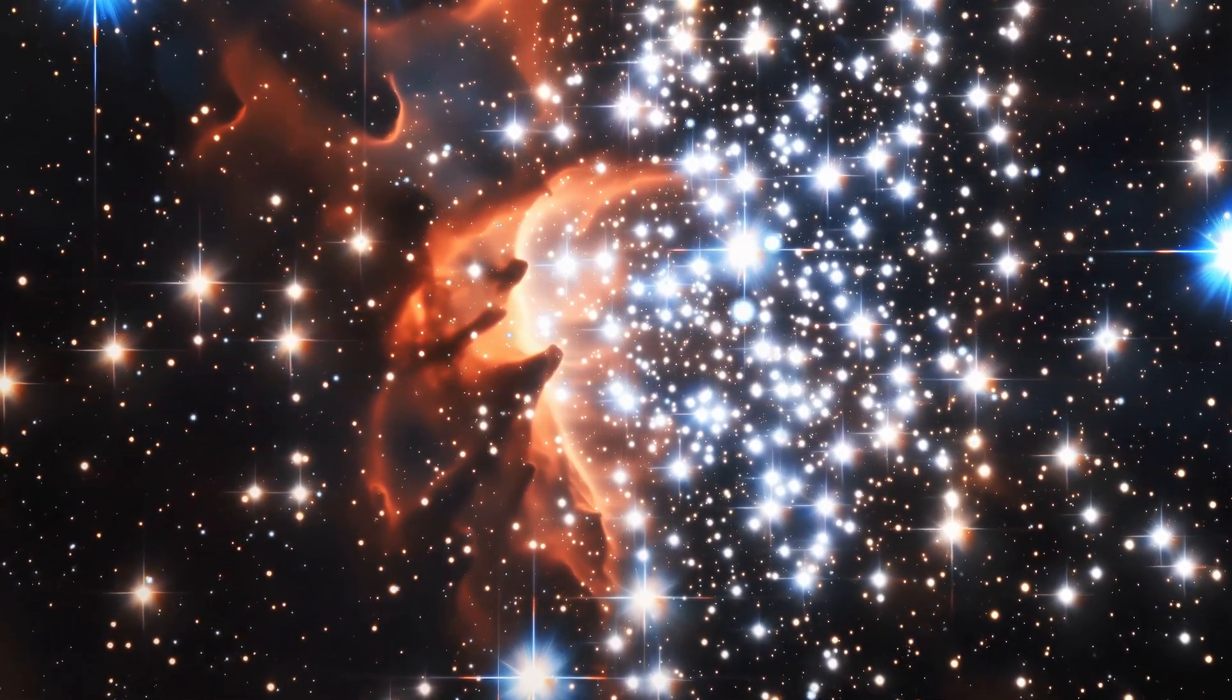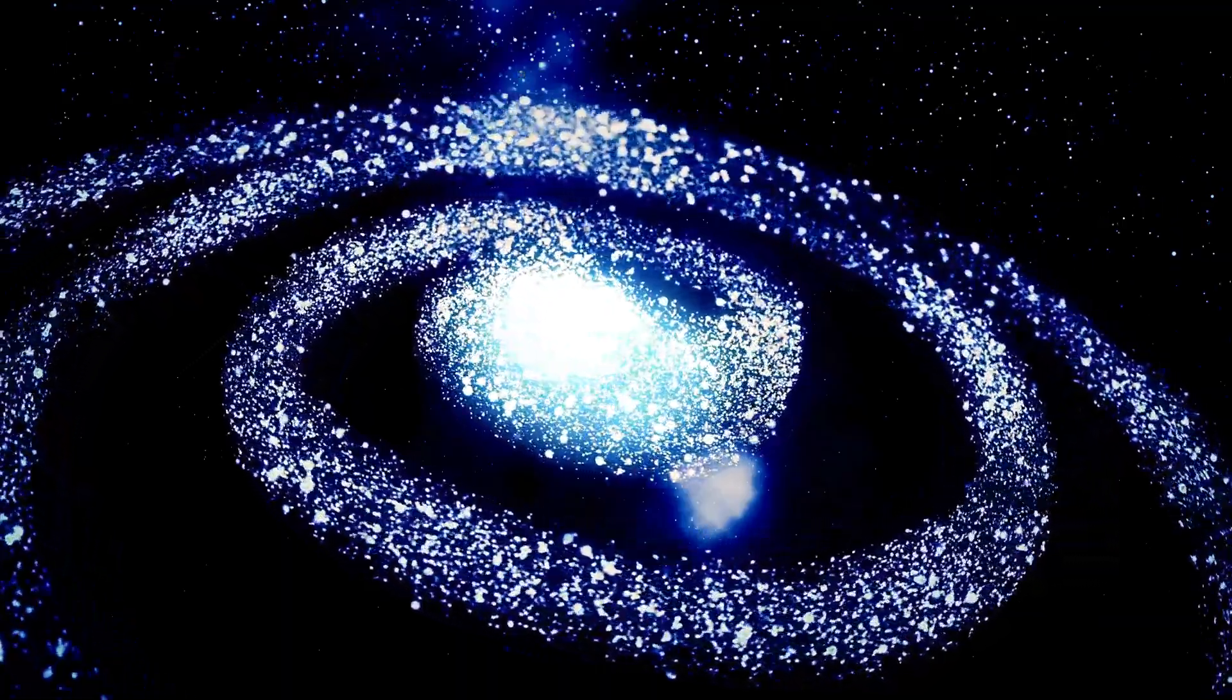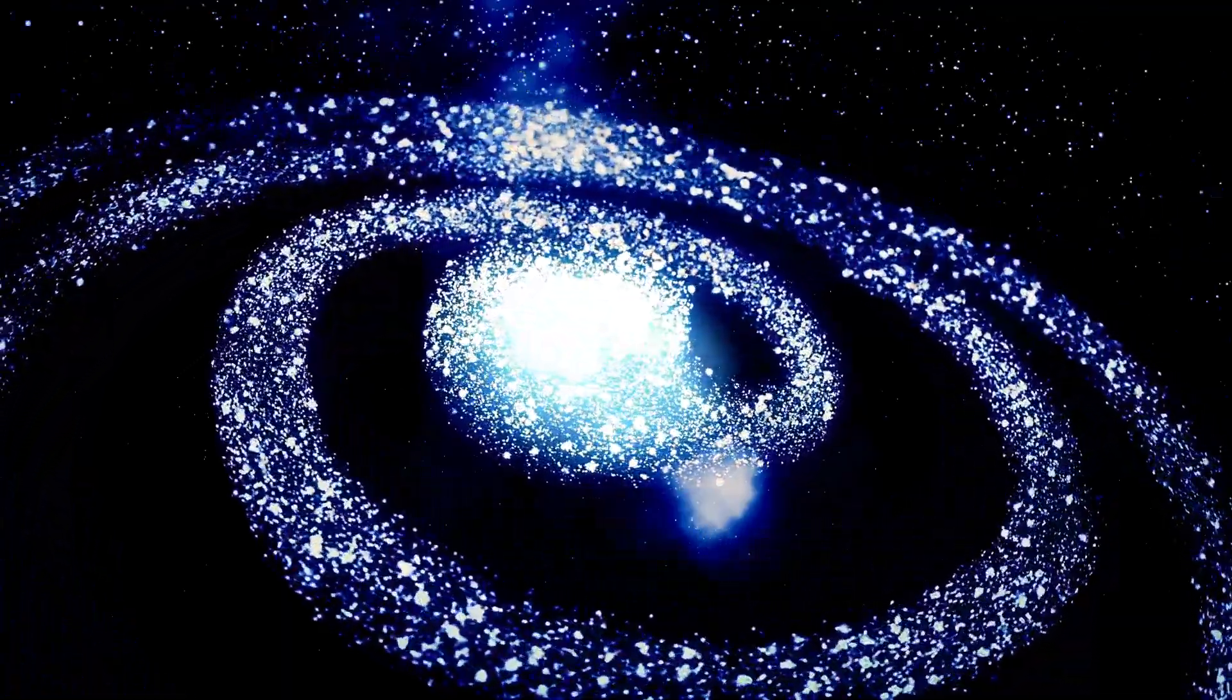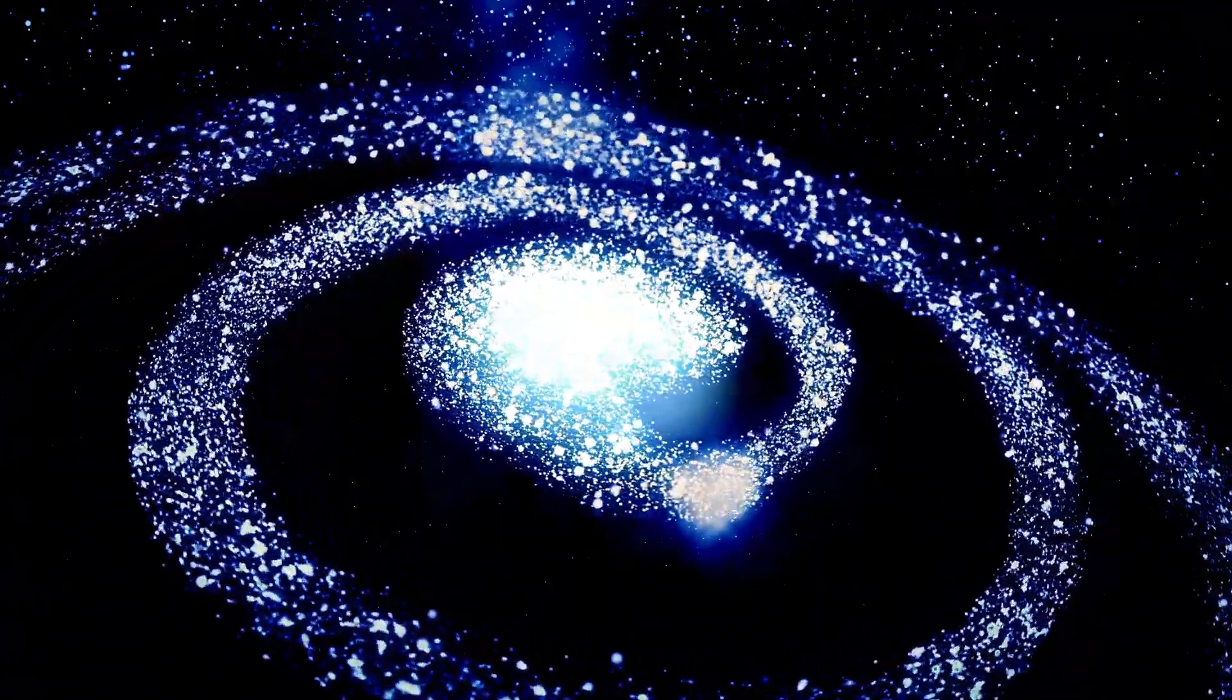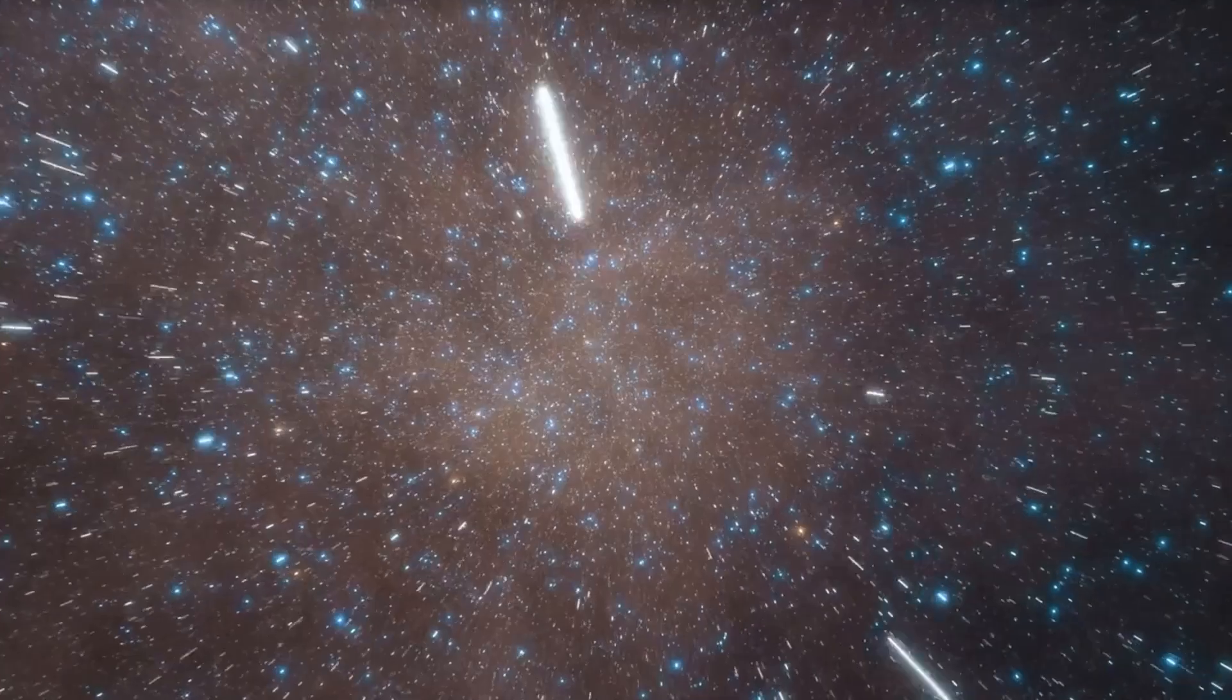Proxima B's star is quite faint, emitting only about 1.6% of the Sun's total luminosity. In the visible light range, its radiance is even lower, producing only 5-6% of the Sun's visible light output.